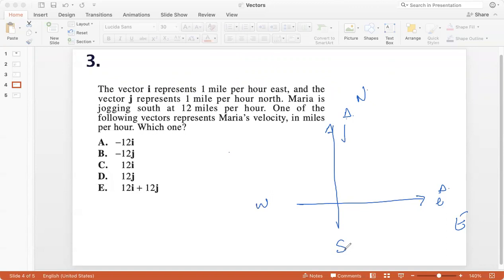Maria is jogging south at 12 miles per hour. One of the following vectors represents Maria's velocity, which one? So if she's jogging south, then this is her direction, which is negative j-cap because j-cap is north, so negative j-cap is south. And if she's jogging at 12 miles per hour, it would be minus 12 j-cap. So the vector that represents Maria's velocity is option B minus 12 j-cap.